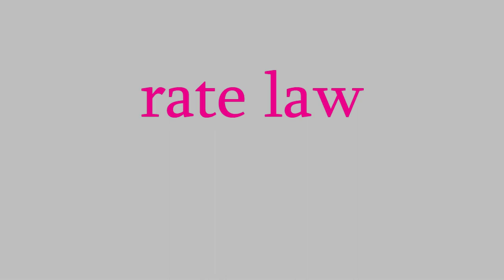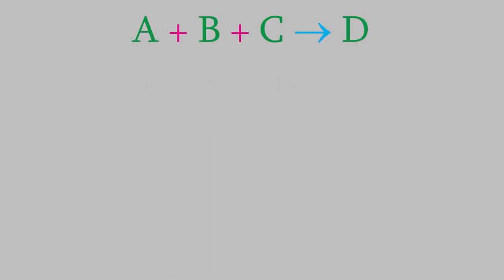Today I want to tell you about what a rate law is and how you use it. It's one of the most important topics in this chapter, because we can use rate laws to get all kinds of information about chemical reactions, as we'll see in the next few videos. To determine the rate law for a reaction, we have to perform experiments. For example, suppose we had a generic reaction like this: we have three different reactants, A, B, and C, and we form a product called D.